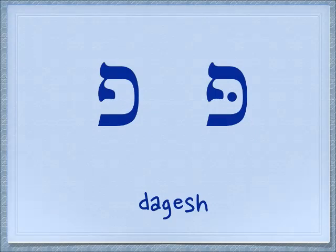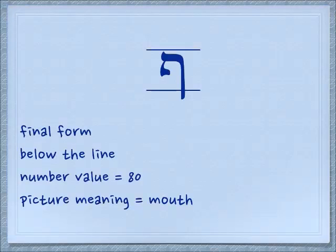If we compare the shape of the Kaf and the Pei, we'll see that the outside shape of the two letters is similar, but remember the Pei has a little part that hangs down in it. Today we're also going to learn the final form of the Pei. This letter also comes below the line but it's got that same little dangle hanging in it. Remember the picture meaning for the Pei is mouth. We very rarely see the dagesh in the final Pei — it's almost always pronounced as an F sound.